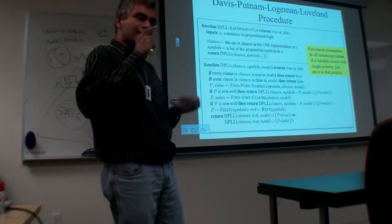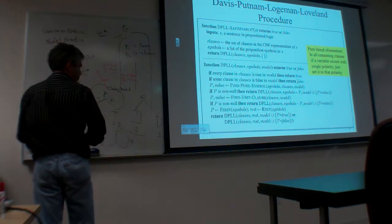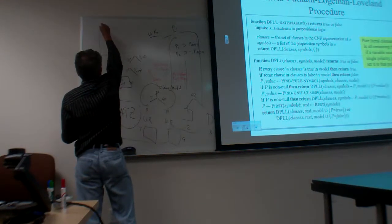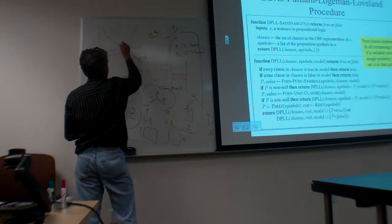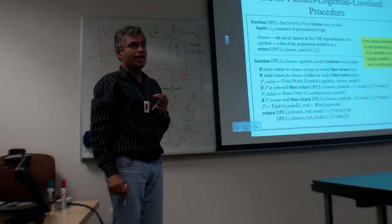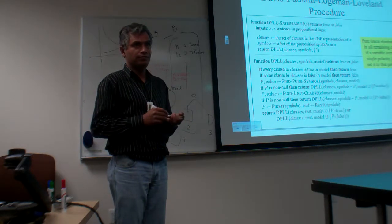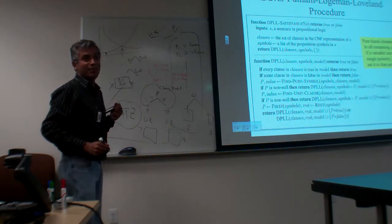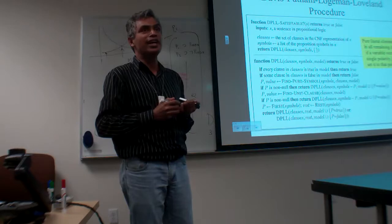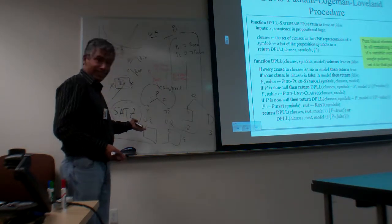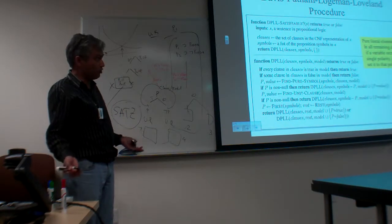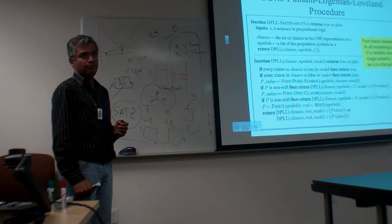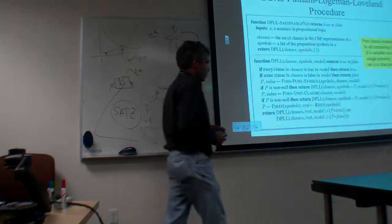One more idea where spending time on heuristic computation pays off. The real issue is: where is the minimum of heuristic computation cost plus search cost? Don't trust your intuitions always — intuitions, especially due to laziness, say the heuristic computation should be cheap, writable in two lines of code. In SATZ the heuristic computation takes most of the time, and yet that's what helps DPLL.